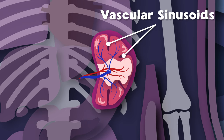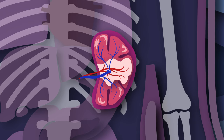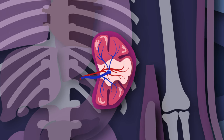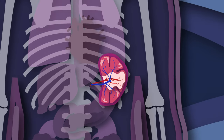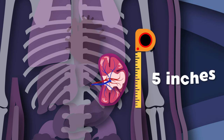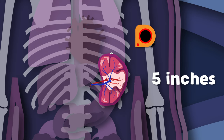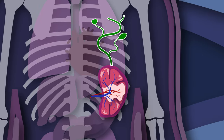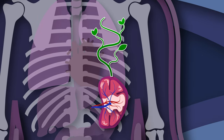Vascular sinusoids are white vessels that drain into pulp veins. We'll learn how this all works, but first let's sing again. I am your spleen. You will learn what this means. I am purple, 5 inches long, and I'm shaped like a bean.